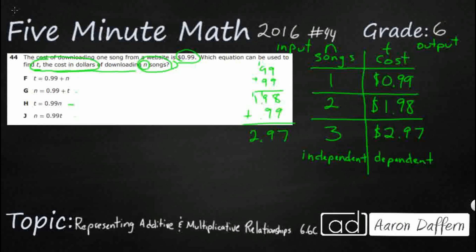Now that we have some values, we can start plugging them into these equations and see which work. Let's start with F: t equals 0.99 plus n. So 0.99 equals 0.99 plus 1. Well, no, that's not going to work because that actually equals 1.99. They're just adding the number of songs - 99 cents plus 1, plus 2, plus 3. That's not going to work because we have to actually double or triple the cost of the song. So that is not going to work.